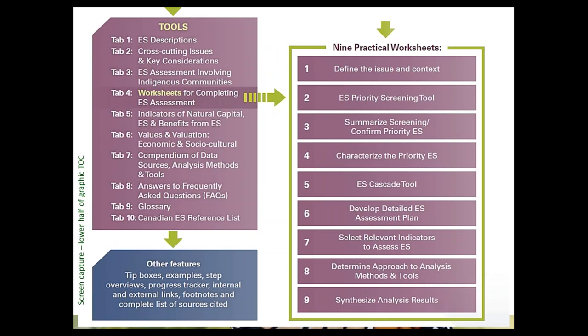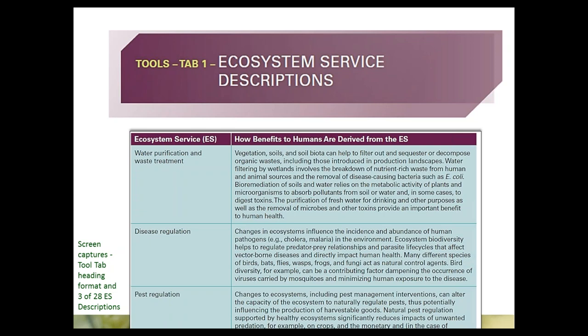Now I want to briefly introduce the tools in the tool tabs — the lower half of the 'What's Inside' graphic. Tool Tab 1 is a detailed list of ES descriptions with examples; it expands the one-page chart from Chapter 1 into a multi-page chart with much more detail, which users find helpful because while some ecosystem services are familiar, others are less clear from the name alone.